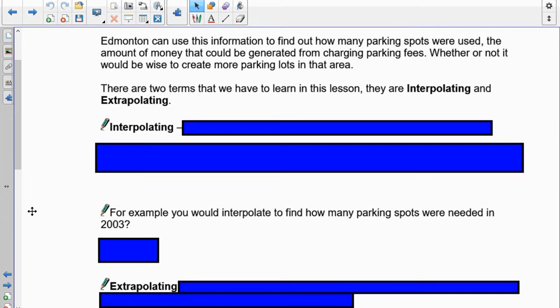And we have to take a look at this, and make some decisions about it. So Edmonton can use this information to find out how many parking spots were used, the amount of money that could be generated from charging those parking fees, and whether or not it would be wise to create more parking spots. Now there's two terms we have to know about. The first one's called interpolating, and the second one's called extrapolating.